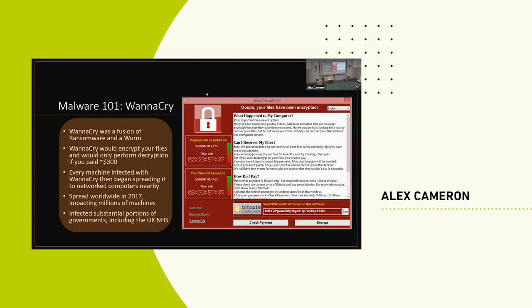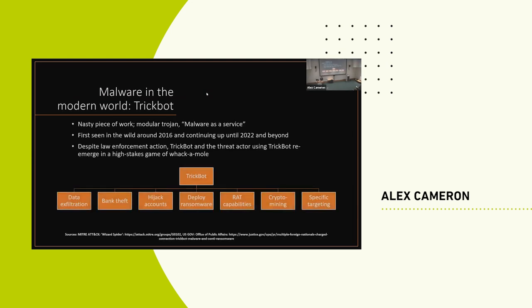They're worming around networks and clogging things up, encrypting everything as they go, and making money from the damage they're causing. It's a really great — well, really terrible — example of malware that spans multiple different business models. They're not just trying to cause damage; they're actually generating money from it. And malware has moved on since 2017 — it only gets worse.